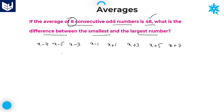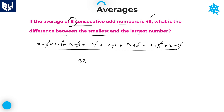The average is the sum of all values divided by 8. When you add all the values, all the plus and minus terms cancel out, leaving only 8x. So 8x divided by 8 equals 48, therefore x equals 48.